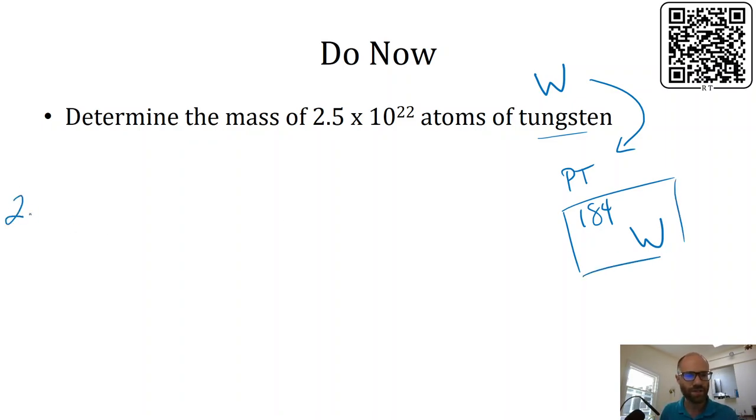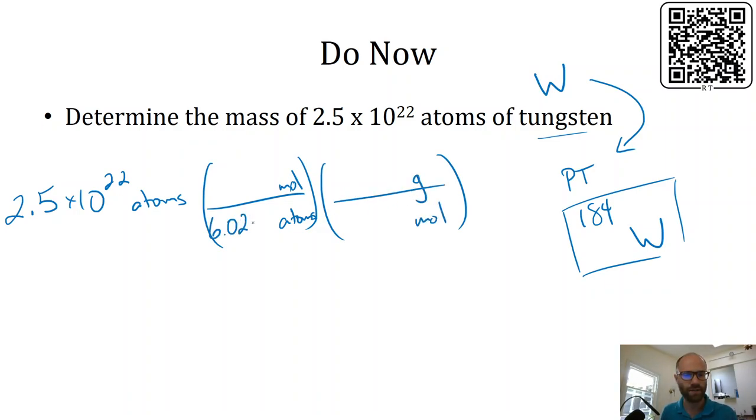So for our conversion, we're going to just write our given value like usual, and we're going to cancel out atoms. But we can't go straight to mass, grams. We're going to go to moles because that's the relationship that we know. And then also we're going to immediately go from moles to grams, and then we just have to fill in our dimensional analysis. I get 7.641 grams.